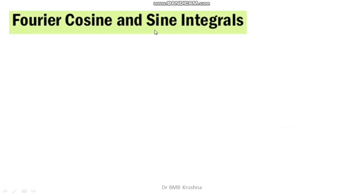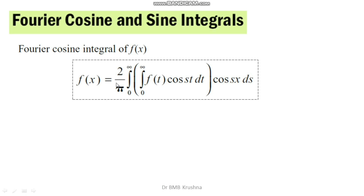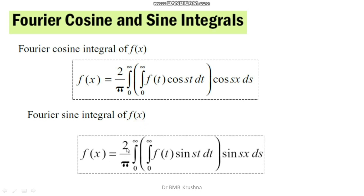The Fourier cosine integral of f(x) is: f(x) = (2/π) ∫₀^∞ [∫₀^∞ f(t) cos(st) dt] cos(sx) ds. The Fourier sine integral of f(x) is: f(x) = (2/π) ∫₀^∞ [∫₀^∞ f(t) sin(st) dt] sin(sx) ds.